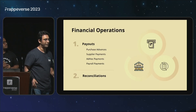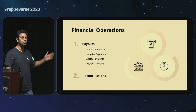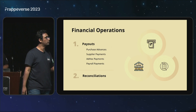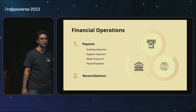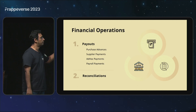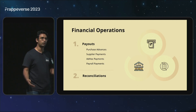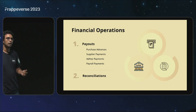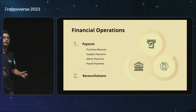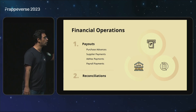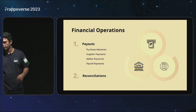Before we dive into the demo, just to understand what to expect — there are two parts of what we are planning to solve. One is payouts, the other is reconciliations. Payouts essentially cover purchase order advances, purchase invoices, supplier payments, ad hoc payments beyond those two documents, or payroll payments that you would like to process on ERPNext.